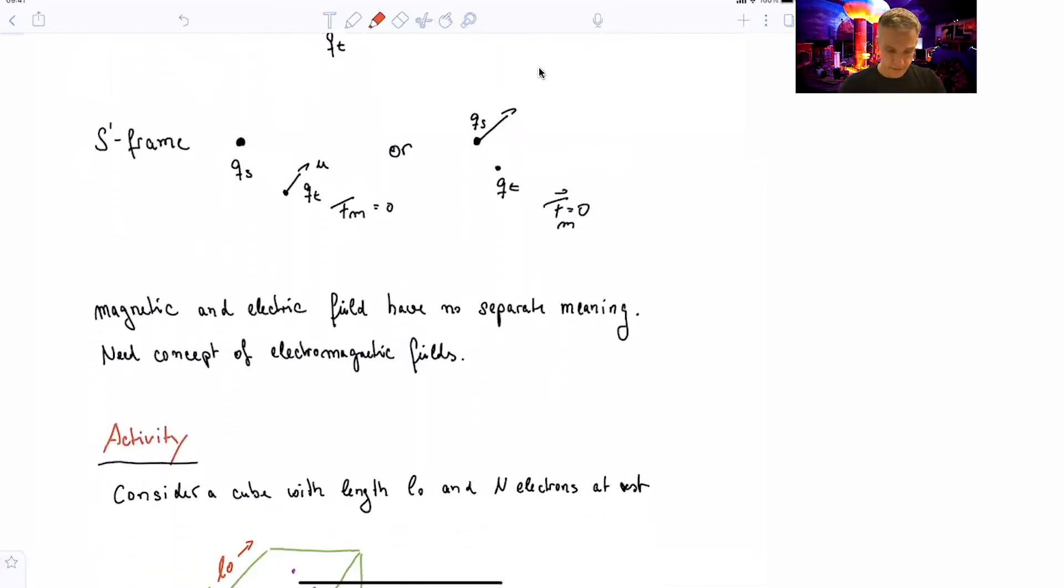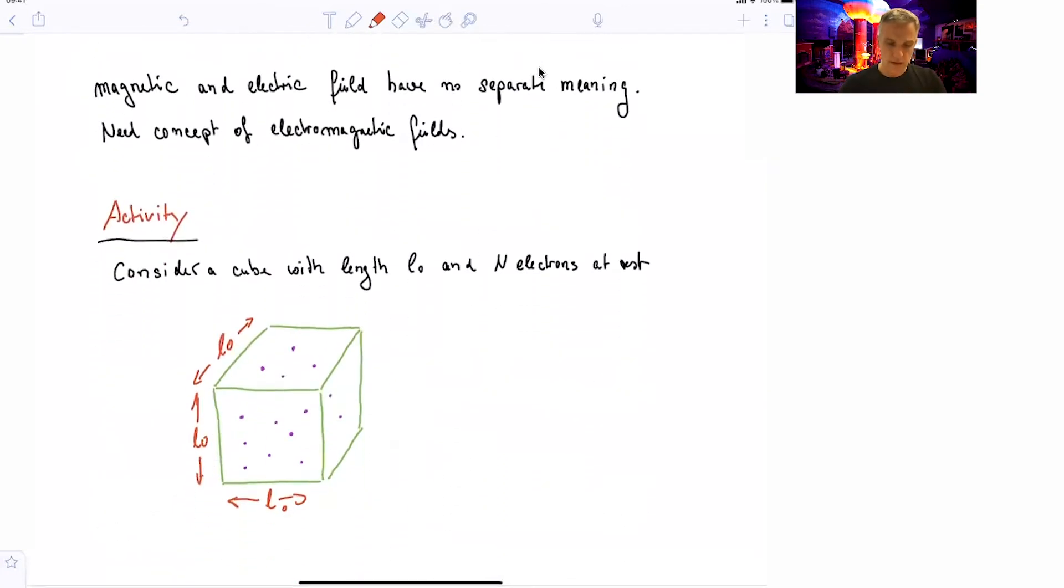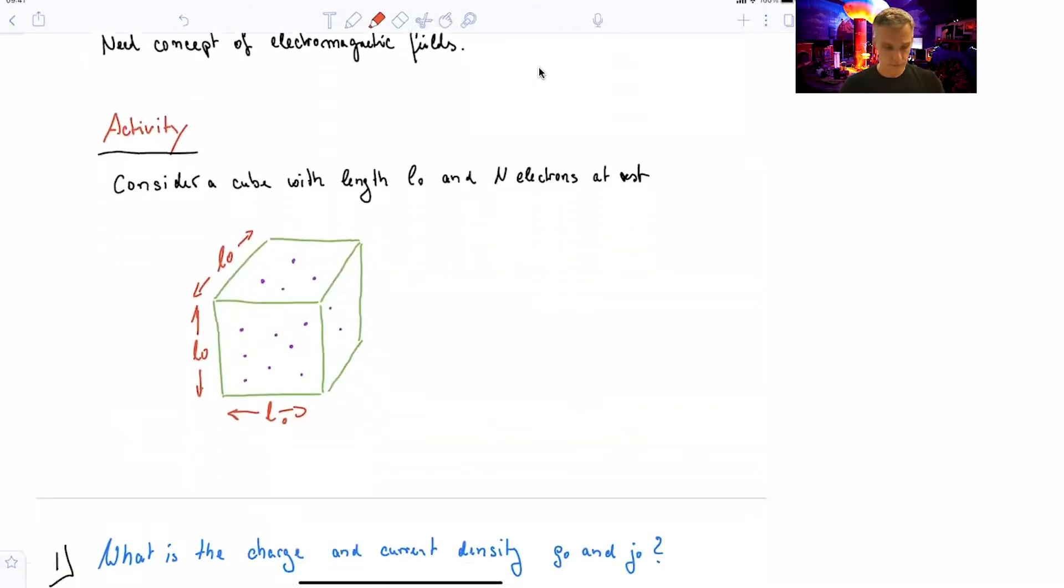As a first activity, I want you to consider a cube of length L with n electrons, with n charges inside, and every single one at rest. And what I want you to figure out is, what is the charge and current density, rho naught and j naught, of this cube?